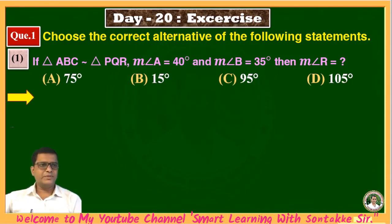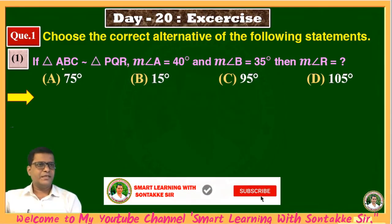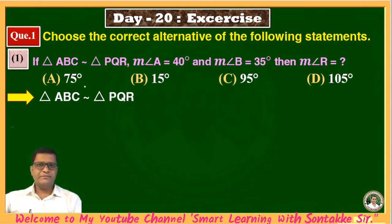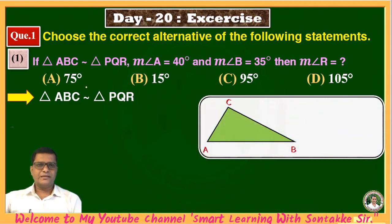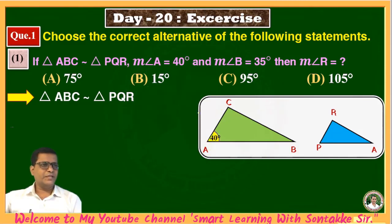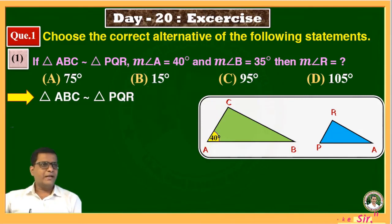To see the solution, two triangles are given as similar — triangle ABC is similar to triangle PQR. We will write the answer using a figure. First draw two triangles, triangle ABC and triangle PQR. These two triangles are similar. Angle A is given as 40 degrees, and angle B is 35 degrees.